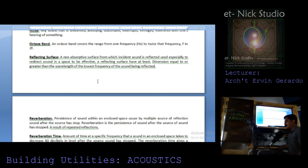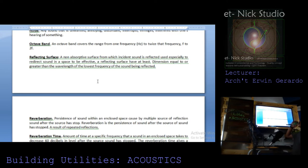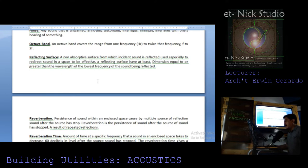A reflecting surface is a non-absorptive surface from which incident sound is reflected. It is used to redirect sound in a space. To be effective, a reflecting surface must have at least one dimension equal to or greater than the wavelength of the lowest frequency of the sound being reflected.